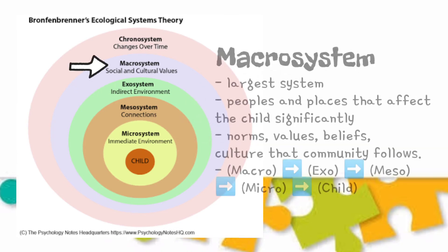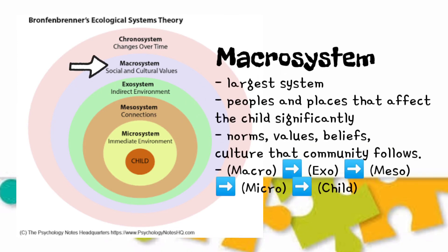The macro-system is the largest system that contains people and places that affect the child significantly. In this system, it involves norms, culture, and values that the community follows, as well as the exo, meso, and micro to child.